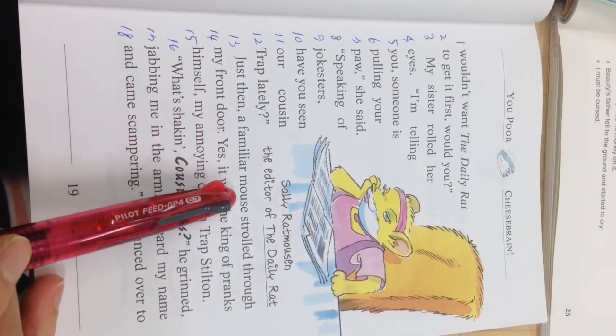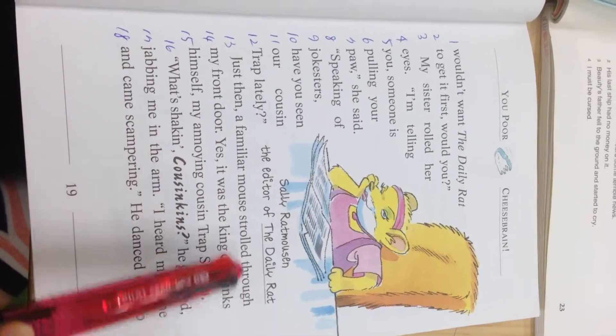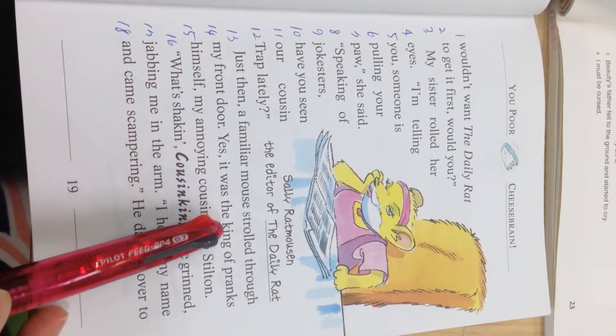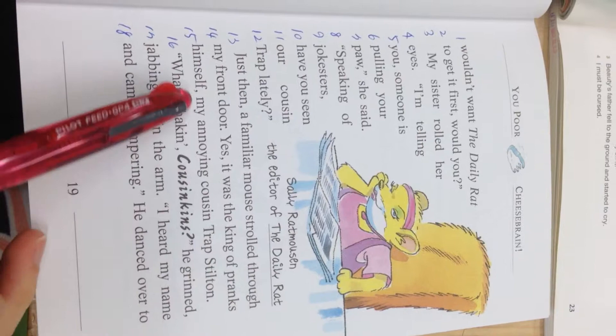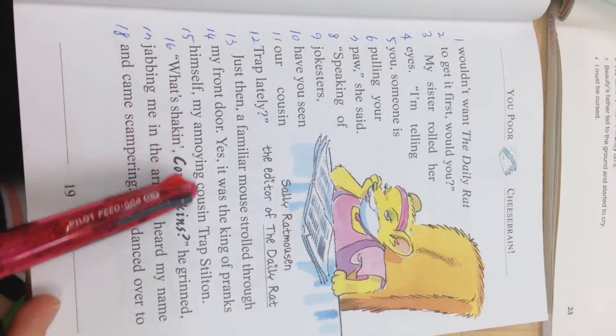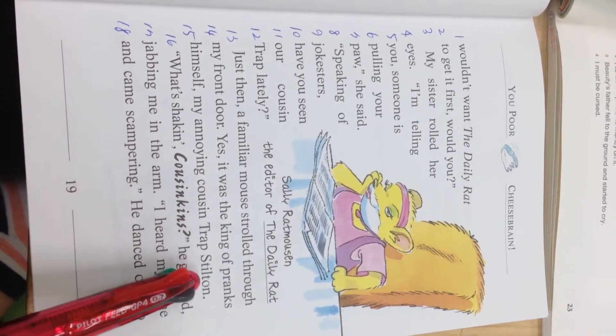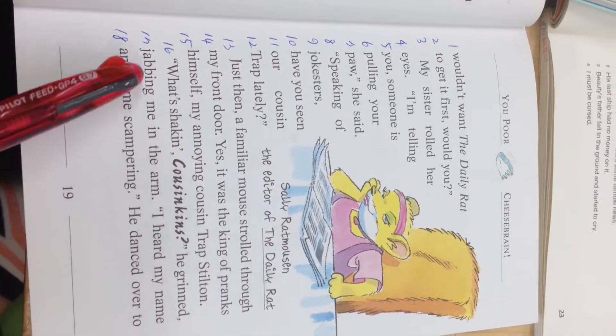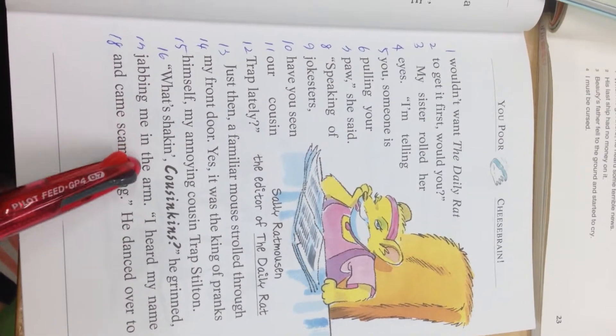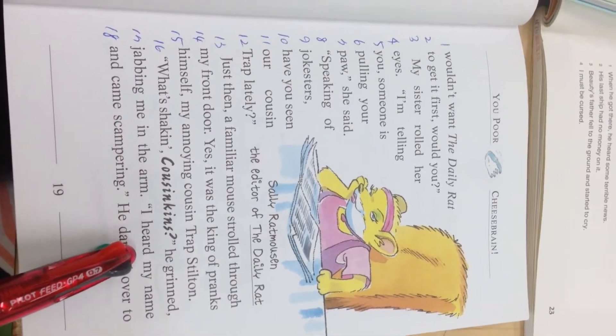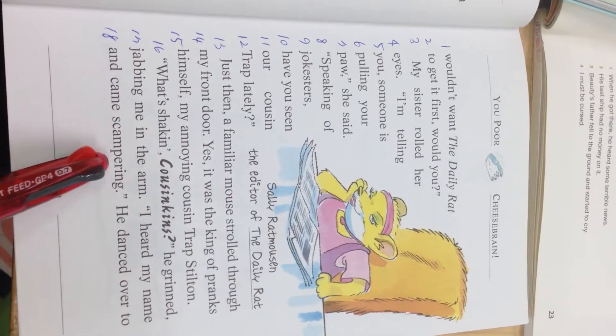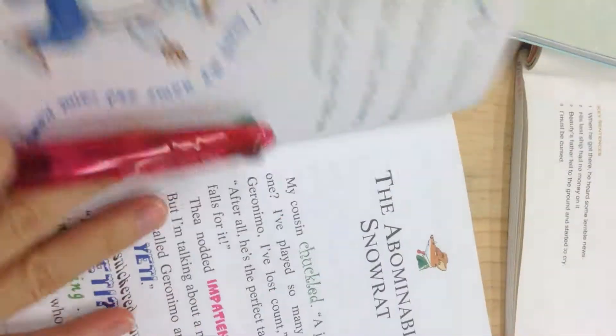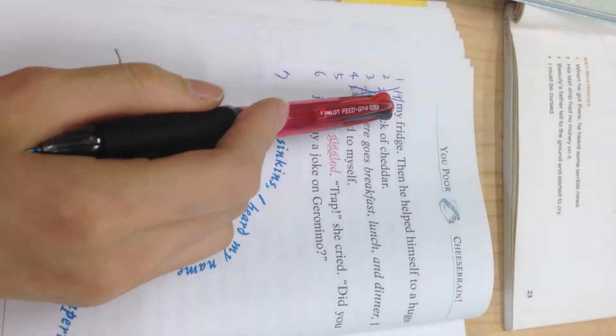a familiar mouse strolled through my front door. Yes, it was the king of pranks himself, my annoying cousin, Trap Stilton. What's shaking, cousin Kins, he grinned, jabbing me in the arm. I heard my name and came scampering. He danced over to my fridge.